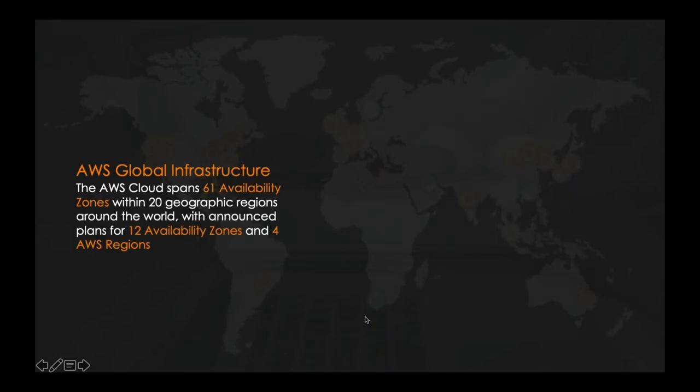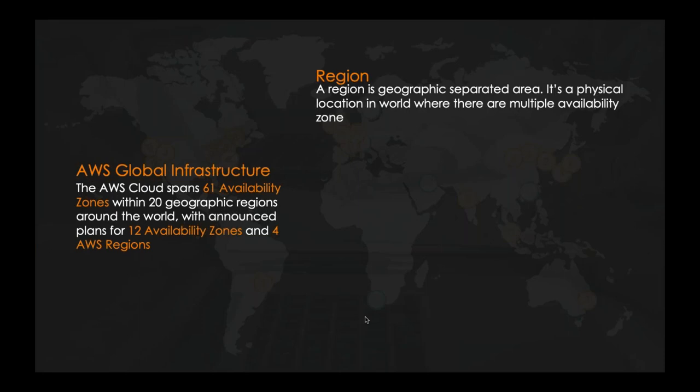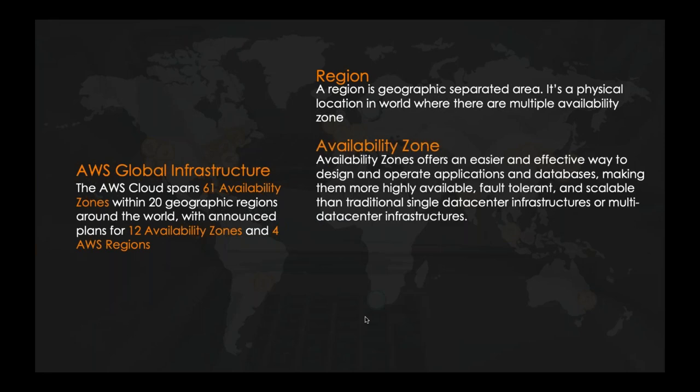The AWS cloud spans across 61 availability zones within 20 geographic regions around the world. AWS has also announced 12 more availability zones in four upcoming regions. A region is a geographically separated area — like Mumbai, US West, Singapore — where multiple availability zones are available. An availability zone is essentially a data center, which is an effective way to design and operate applications and databases.